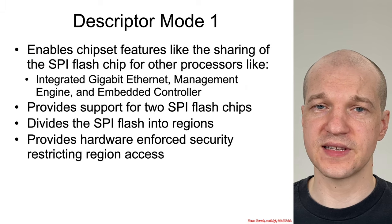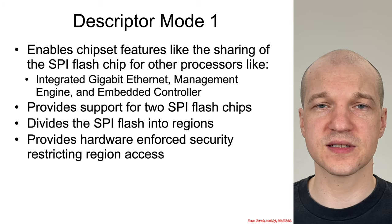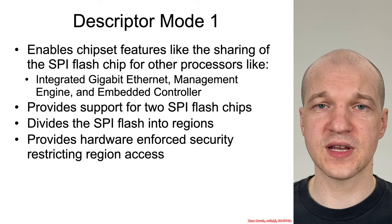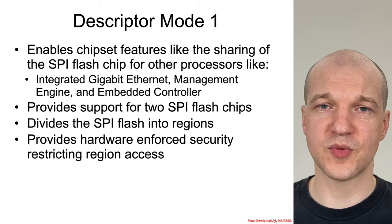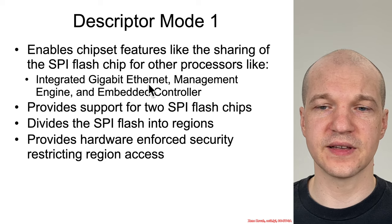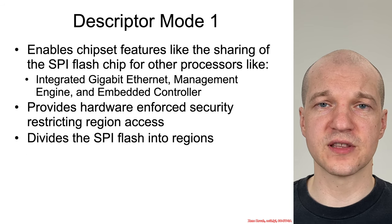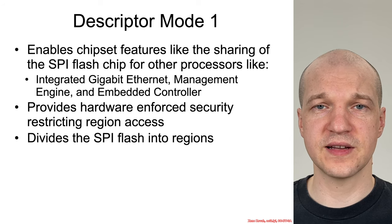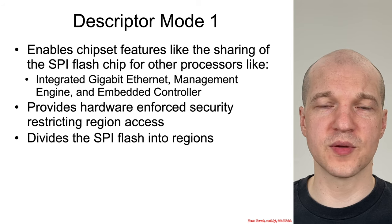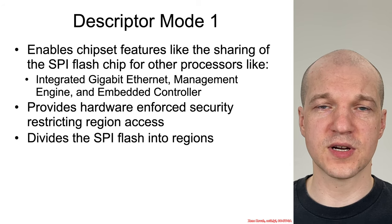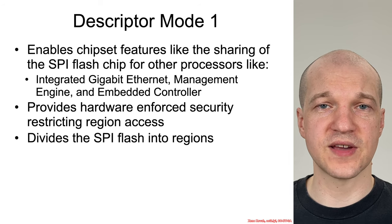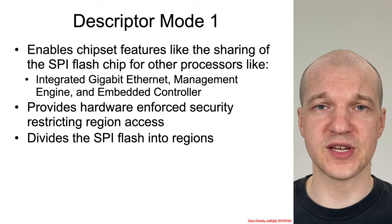In contrast, descriptor mode introduces a flash descriptor data structure that describes how the different portions of the flash can be used, because the flash chip is reused for multiple things — integrated Intel Gigabit Ethernet, management engine, and embedded controllers on newer systems. Those coexist with the BIOS on the SPI Flash chip, and they can potentially be reading and writing the SPI Flash chip independently. The data structure at the beginning of the flash chip breaks it up into different regions and provides hardware support for restricting access between them, so the management engine can't write to the BIOS and the BIOS can't write to the management engine.